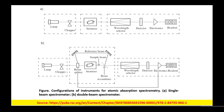Atomic absorption spectroscopy can be a single beam or double beam spectroscope. The difference from UV visible systems is that here there is a chopper. Then we have an atomizer and the other electronics and optical systems.